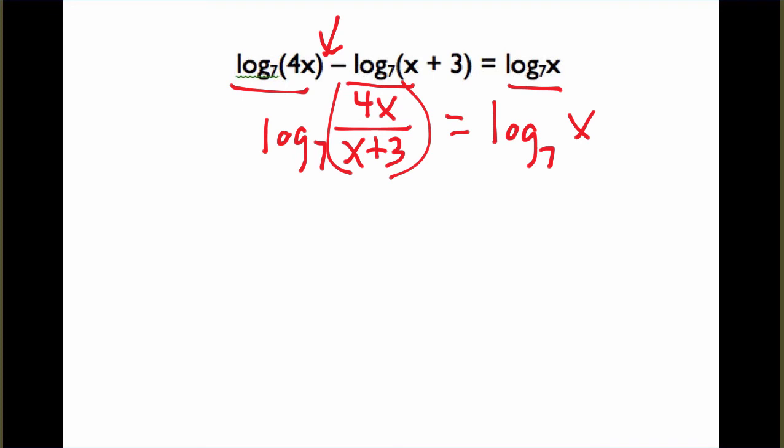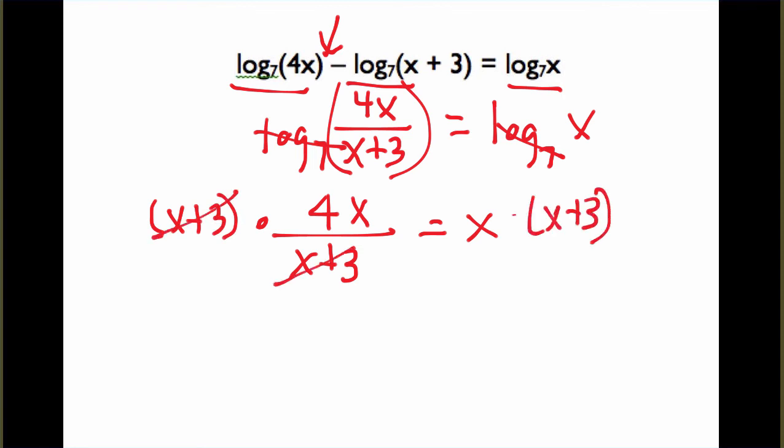And so I don't need to change that at all. Once they're rewritten as 1, I cancel the logarithms out. And I just have the expression 4x over x plus 3 is equal to x. Now this is a rational equation to solve. And what I would do is I would multiply each side by the denominator, x plus 3, because that will cancel out the denominator on the left. I now have 4x equals, and I'm going to distribute this x, x squared plus 3x.